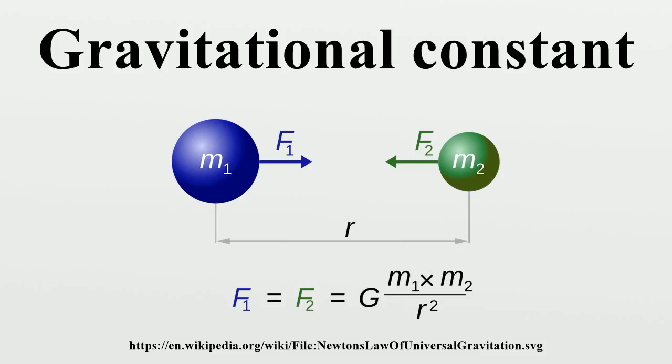The gravitational constant is a physical constant that is difficult to measure with high accuracy. In SI units, the 2014 CODATA-recommended value of the gravitational constant is with relative standard uncertainty 4.7 × 10⁻⁵.